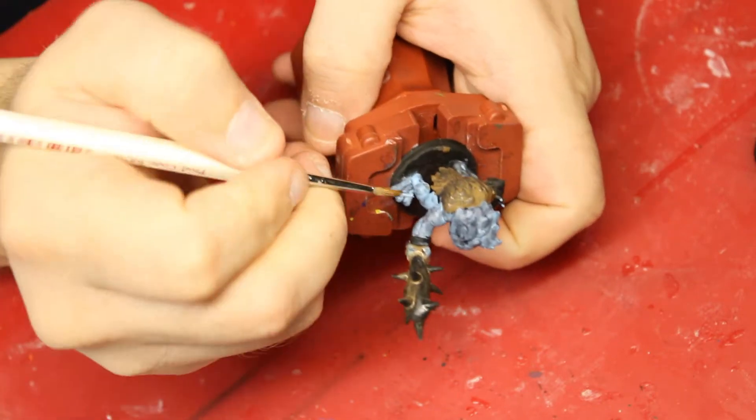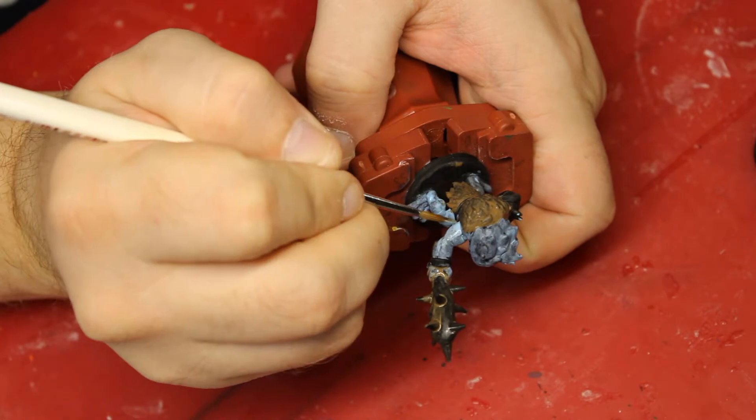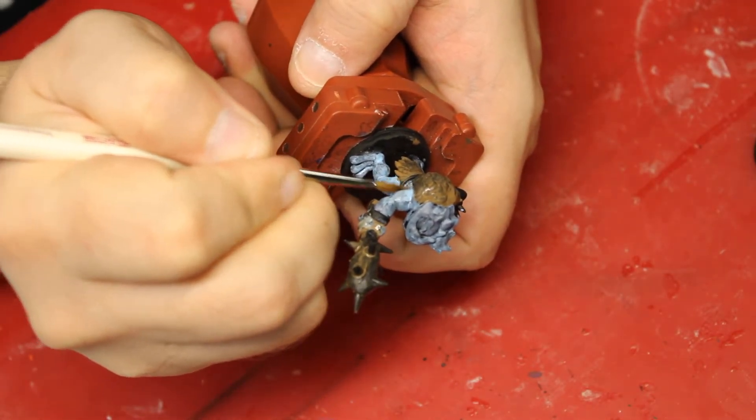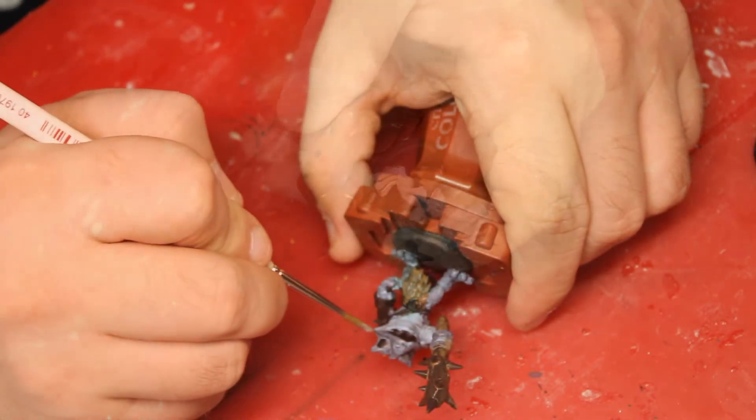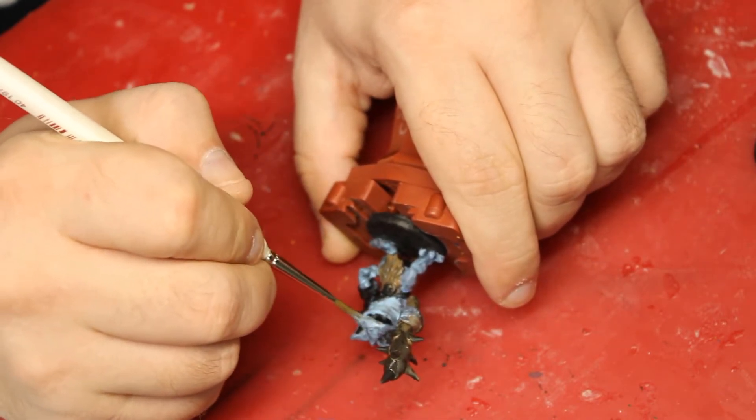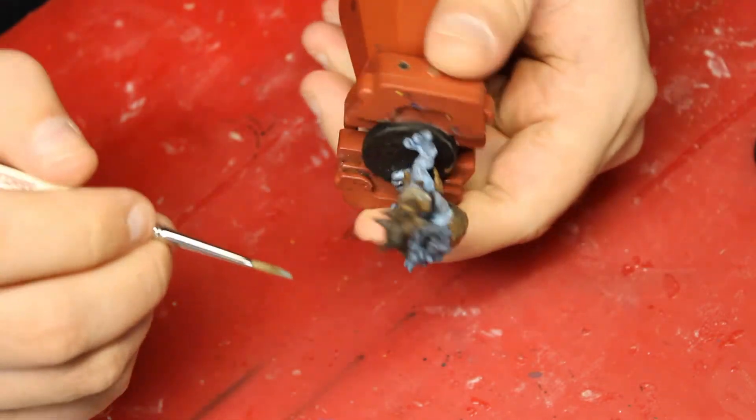Alright, so I first grab my Void Shield Blue, and then after I grab my Void Shield Blue, I go ahead and I start hitting this with a single base coat. I get all of his skin, and this is just going to be a three coat process. So once I coat it with the three colors, I make sure that I hit all of it.